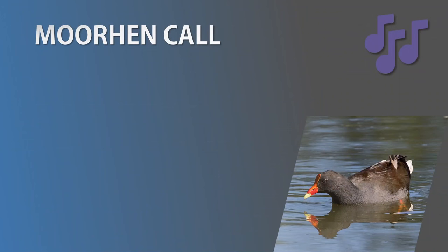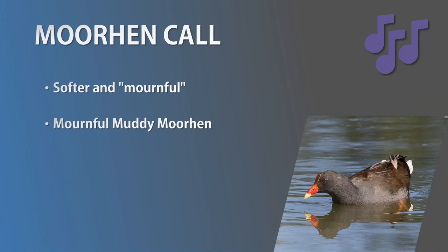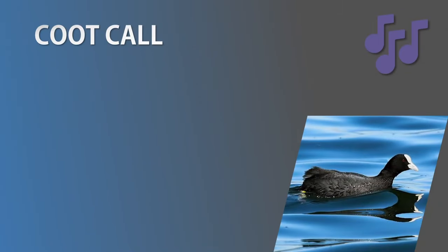The Dusky Moorhen has two calls: a high-pitched cheep similar to the Swamp Hen's but less aggressive, and a lower, mournful call — the one we'll focus on today. Notice how it's less aggressive and softer than the Swamp Hen's. For our memory device: 'mournful muddy Moorhen.' The Coot's call is short, lower-pitched, and gravelly compared to the Swamp Hen and Moorhen. Recalling its parenting style, you can imagine its throat is sore and gravelly from constantly scolding chicks — so add: 'callous charcoal Coot.'